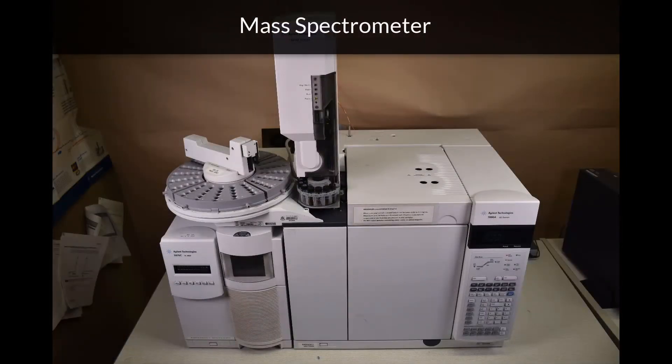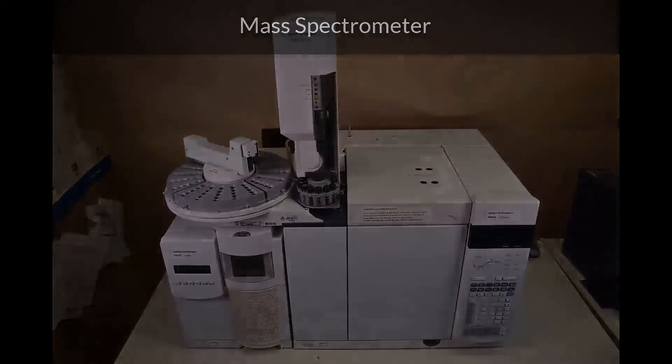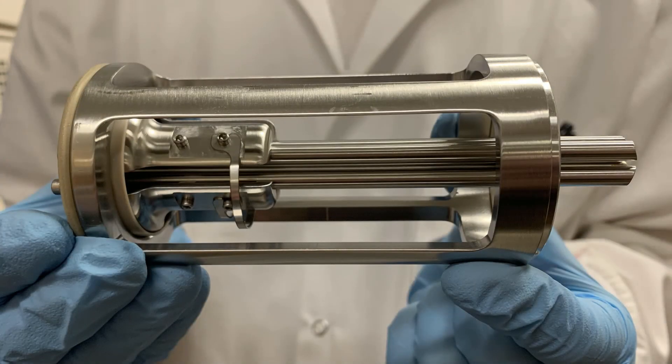This instrument uses a mass spectrometer as a detector. The mass analyzer is a quadrupole. It consists of four rods that have alternating voltages applied to them. Only selected mass-to-charge values will have a stable path through the rods and then are counted based on their relative abundance.